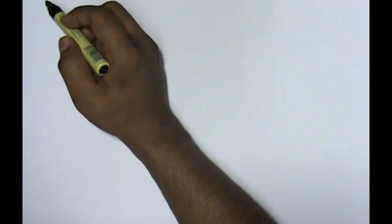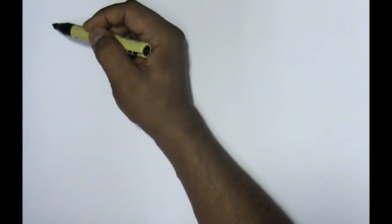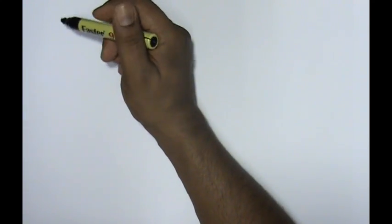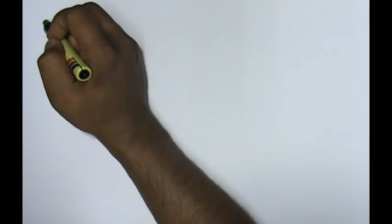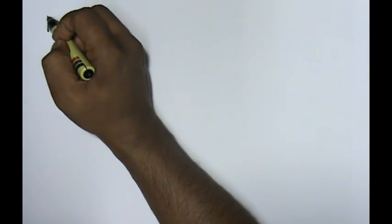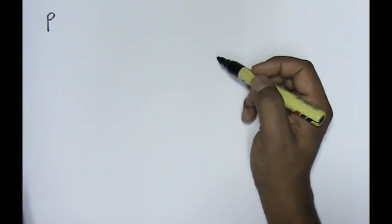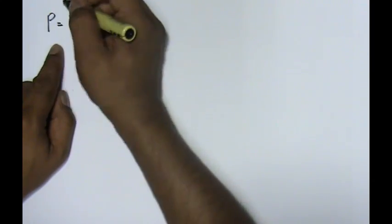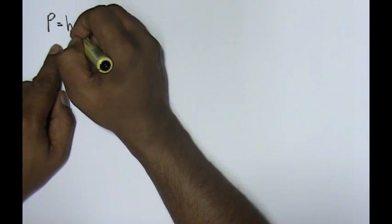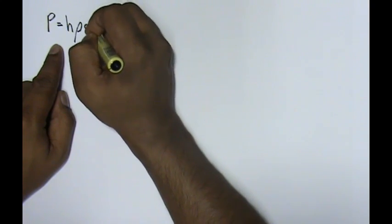Okay, now, to convert our 76 centimeters mercury into Pascal, we need to use the formula that I've taught you in liquid pressure. Pressure equals to your H rho g.